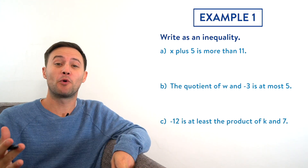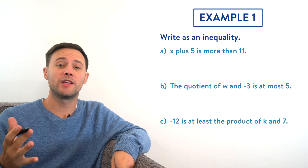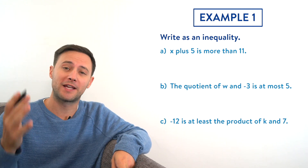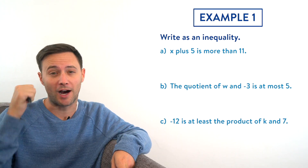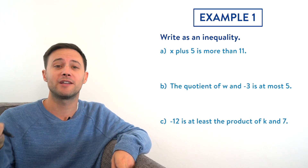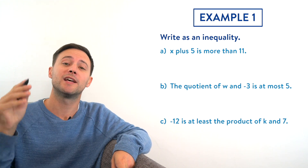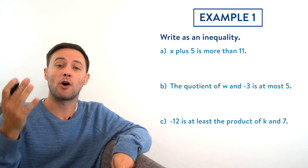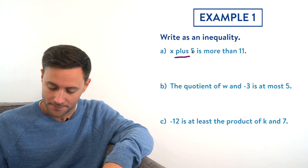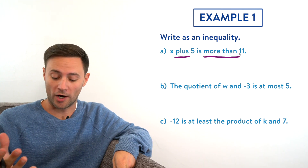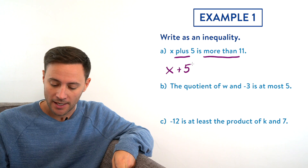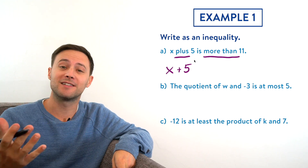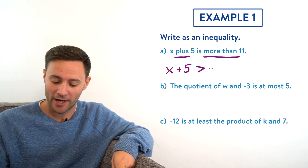Now that we understand the basics, let's try Example 1: write as an inequality. We're looking for keywords — ones that indicate an operation like addition, subtraction, multiplication, or division, and keywords that tell us which inequality symbol to use. For part a: 'x plus five is more than eleven.' The keywords are 'plus' and 'more than,' so we write x + 5 > 11.